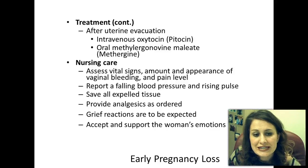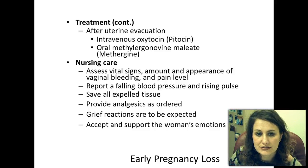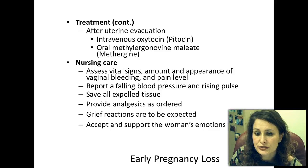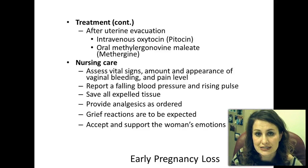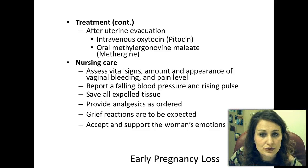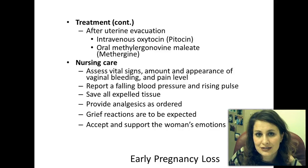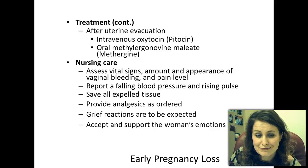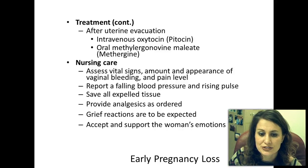Nursing care: assess vital signs, the amount and appearance of vaginal bleeding, and pain level. Count peri-pads to measure blood loss, noting whether there are clots and what the blood looks like. Report falling blood pressure and rising pulse, as the patient is at risk for hypovolemic shock. Save all expelled tissue. Provide analgesics as ordered—ibuprofen is best in this situation. Grief reactions are to be expected and encouraged; do not make the patient feel guilty about grieving. Accept and support the woman's emotions.